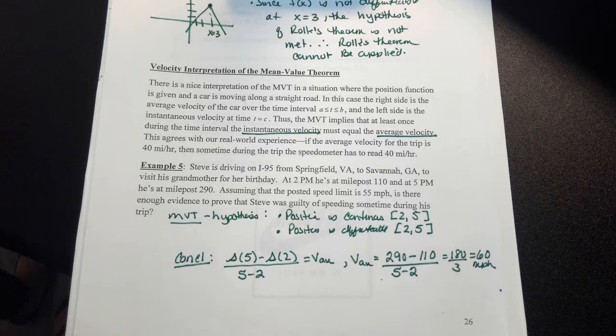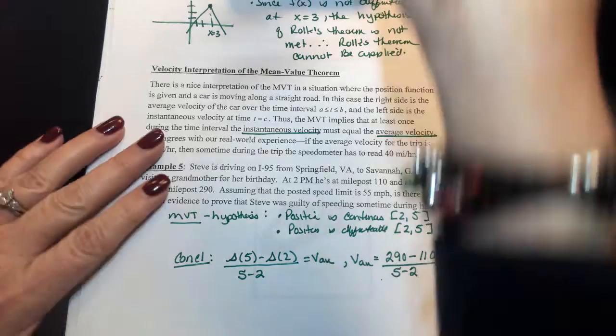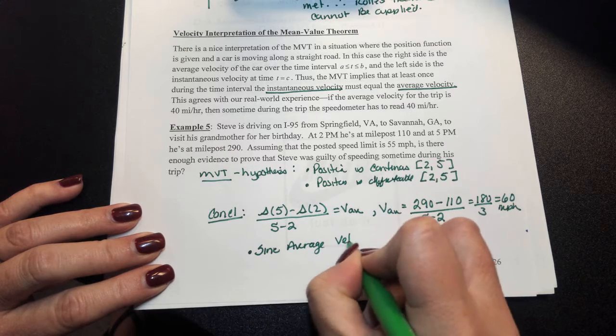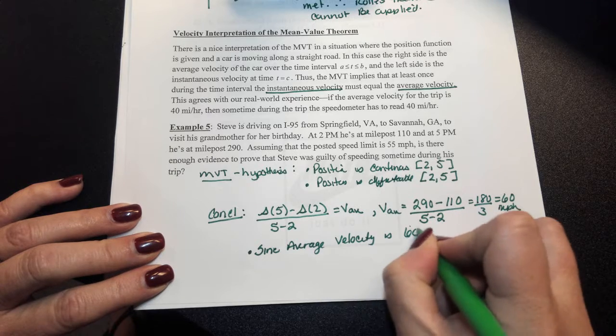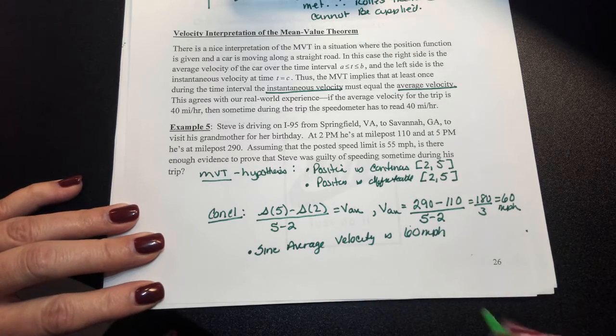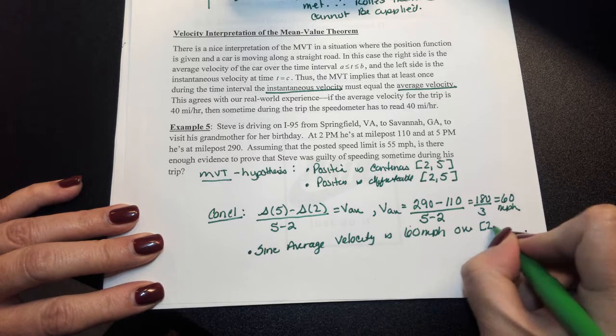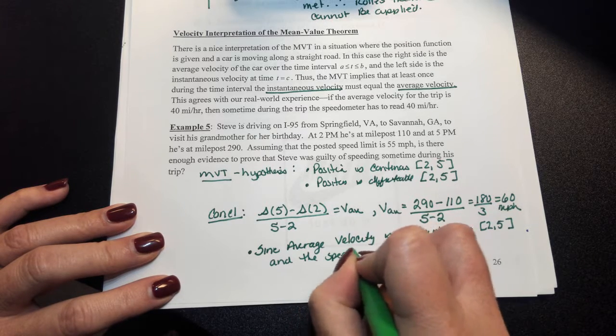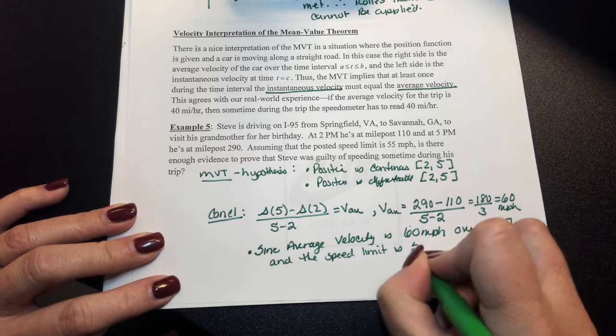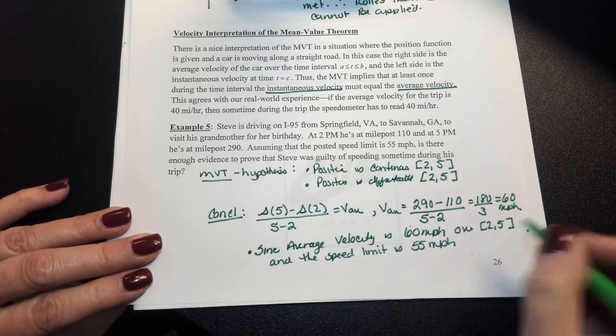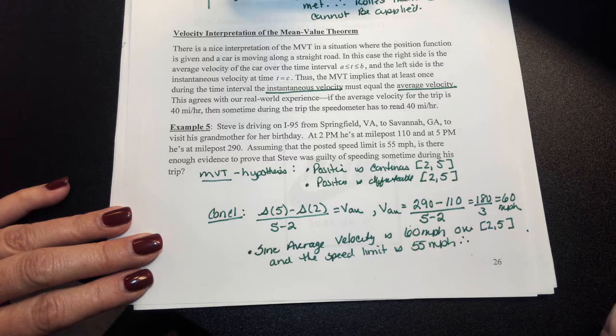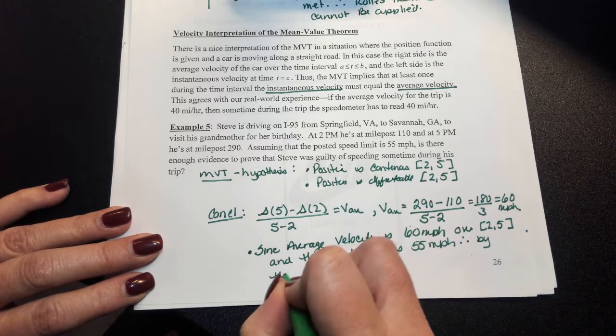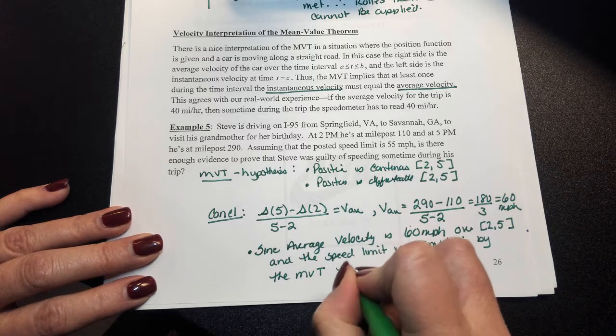His average velocity was 60 miles per hour. So, is Steve guilty of speeding? Yes, he is. Since his average velocity is 60 miles per hour over your time interval from 2 to 5, and the speed limit is 55. Therefore, by your mean value theorem, there is evidence he was speeding.